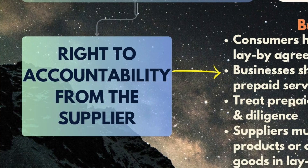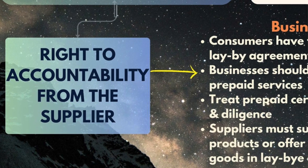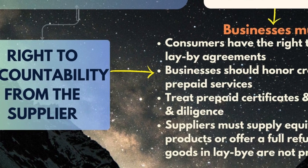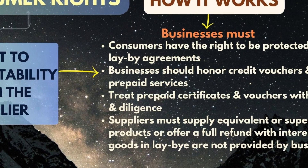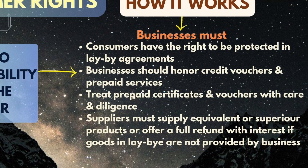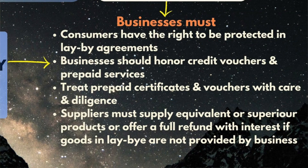The sixth right is the right to accountability from the supplier. Customers have the right to be protected in terms of laid agreements, and the business should honor the credit vouchers and prepaid services they have provided to customers.